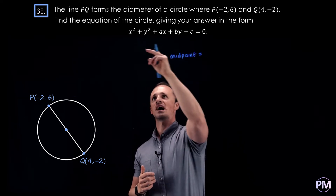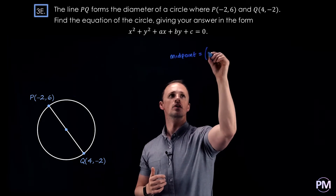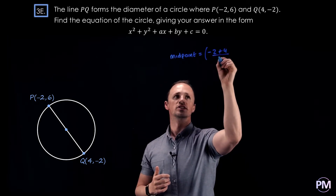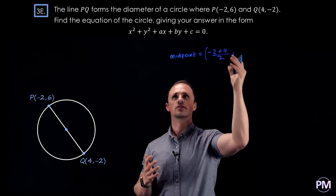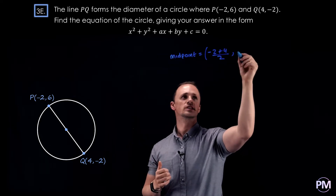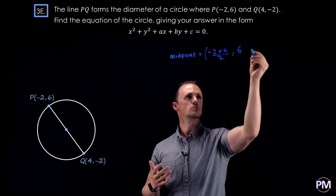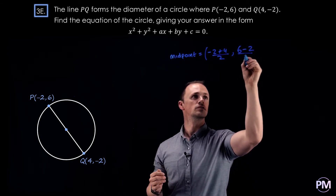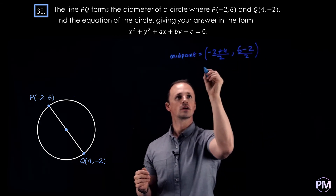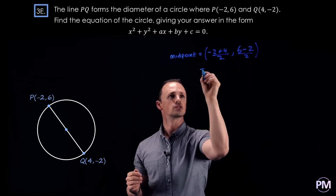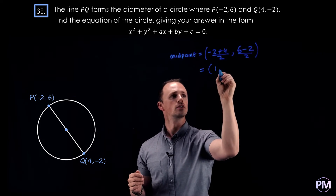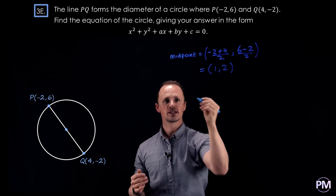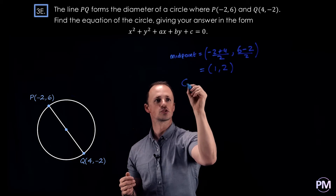To find the midpoint we add the x coordinates together: minus 2 plus 4, then divide by 2. We add the y coordinates together: 6 plus minus 2, so 6 minus 2, divided by 2. That gives us 1, 2. So the centre must be at (1, 2).